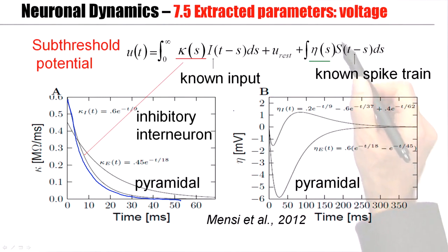Now, if we extract the filter eta by this quadratic optimization procedure from the quadratic error function, then we would find a negative spike after potential for pyramidal neurons, where inhibitory neurons have first a negative contribution, a hyperpolarizing spike after potential followed by a depolarizing, a little bump, a depolarizing spike after potential.